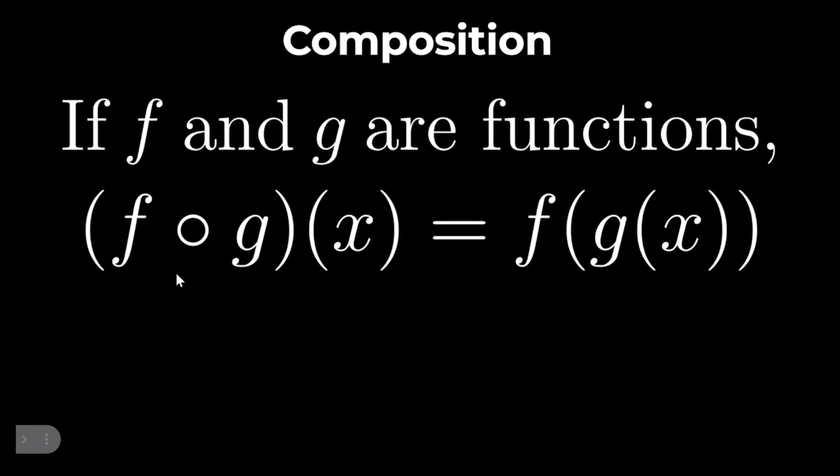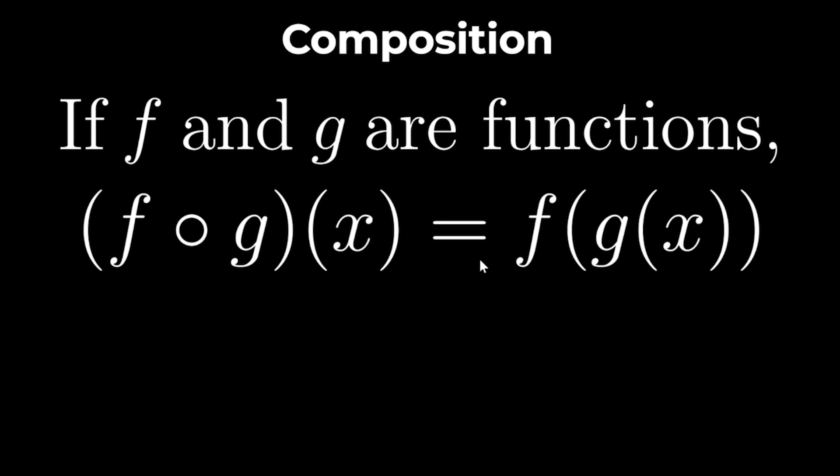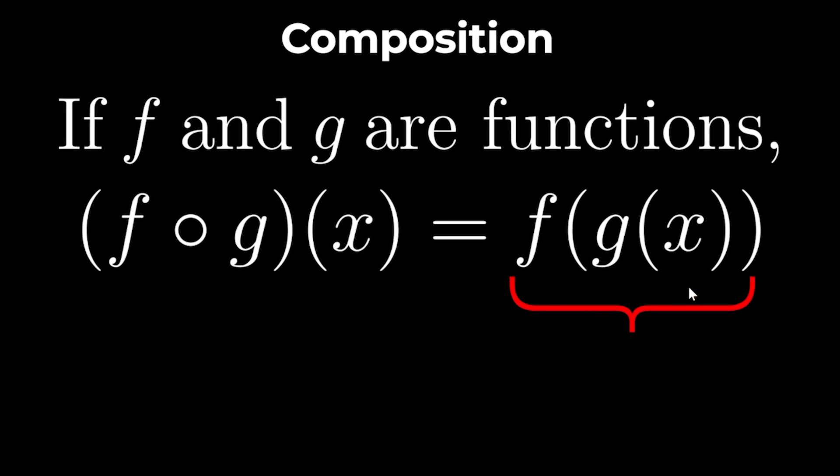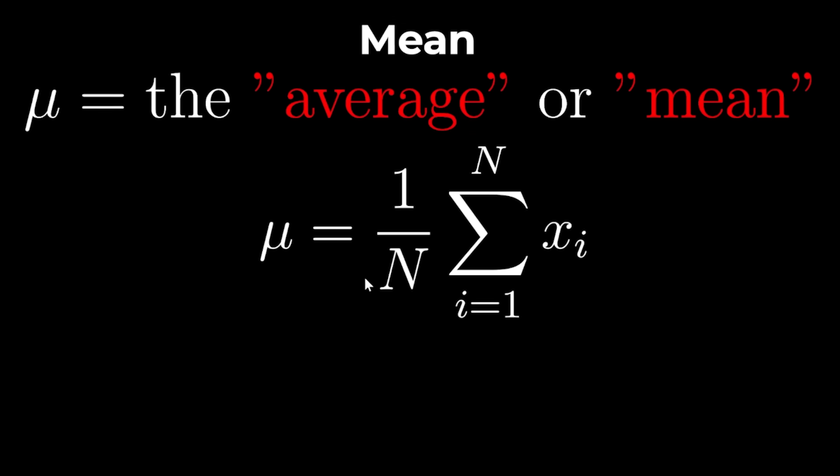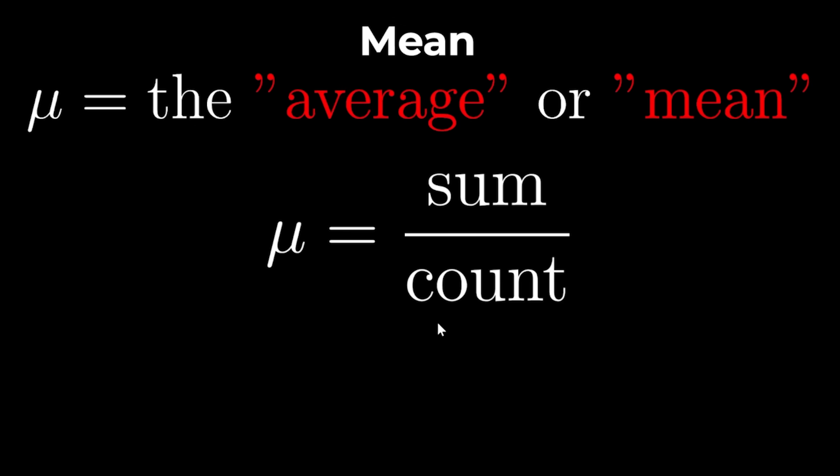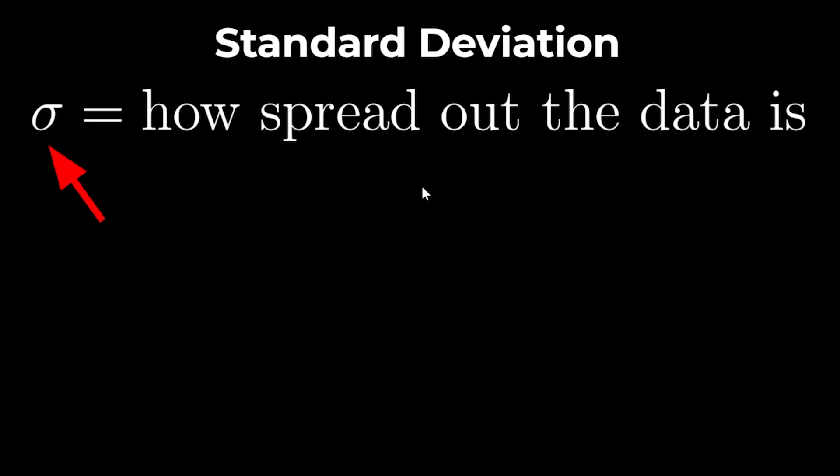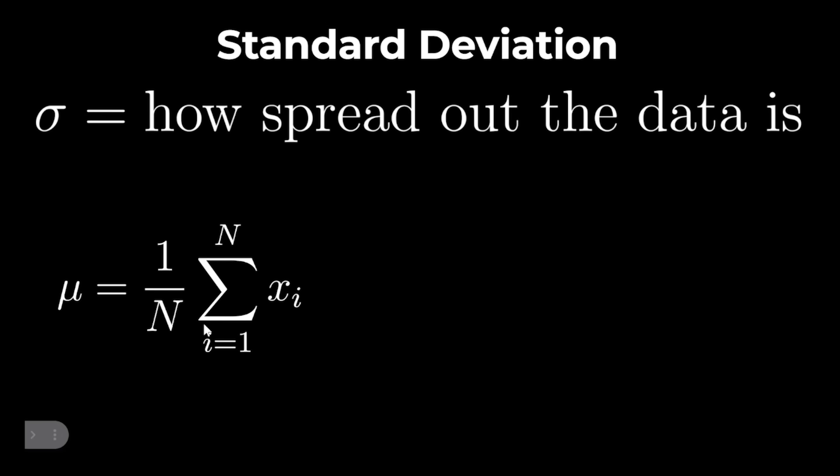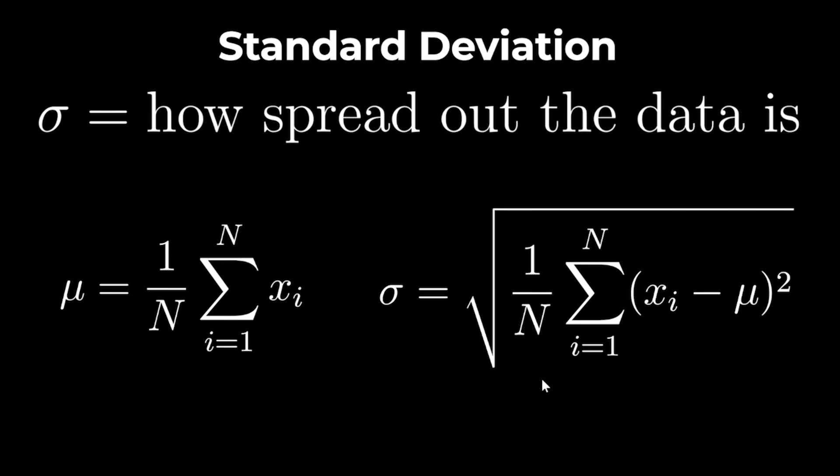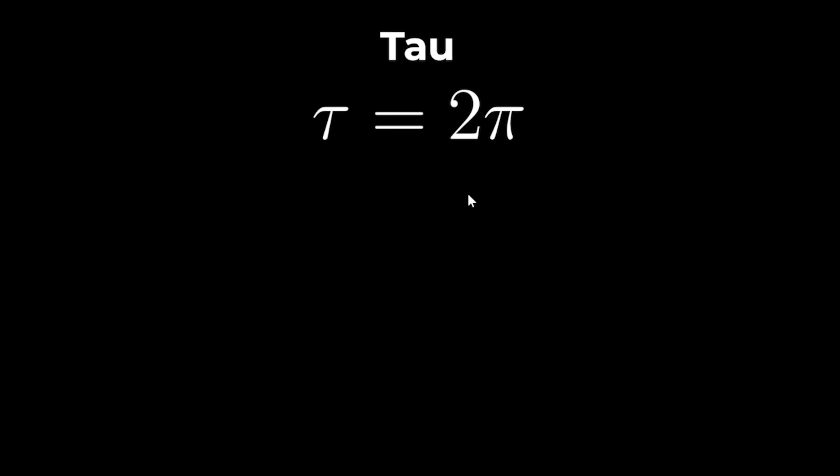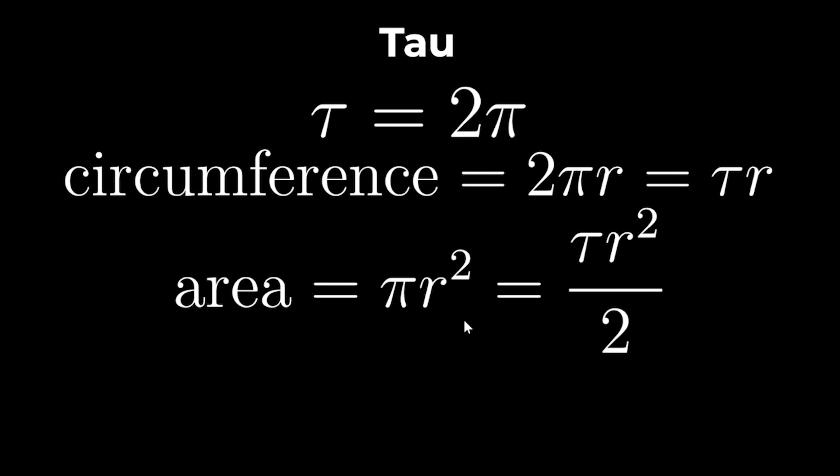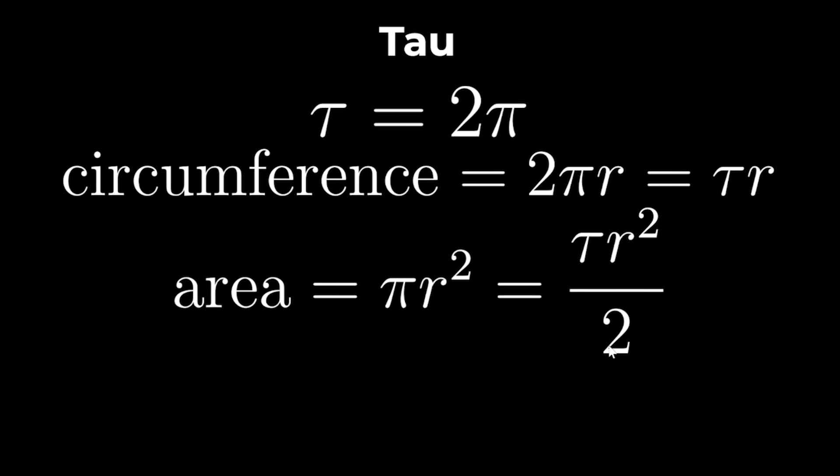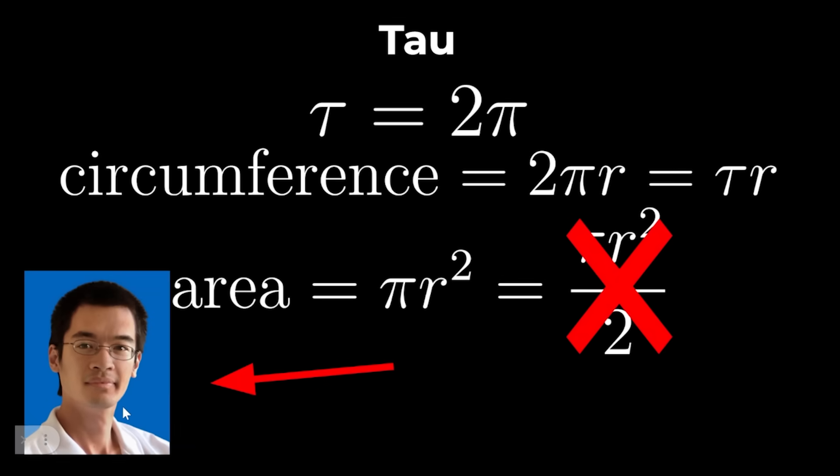If f and g are functions then f circle g is the composite of the functions f and g. So you find g of x first then you find f of all of that. The mean represented by mu is the average of a data set which is found using this formula or as I like to say the sum over the count. The standard deviation denoted by sigma is how spread out the data is. So if you find the mean using this formula then you find the standard deviation using this. Tau is just 2 pi which some believe makes it easier to work with circles. So instead of finding the circumference using 2 pi r you just use tau r. Or instead of finding the area using pi r squared you just use tau r squared over 2. Okay maybe not that one but Terence tau is pretty cool.